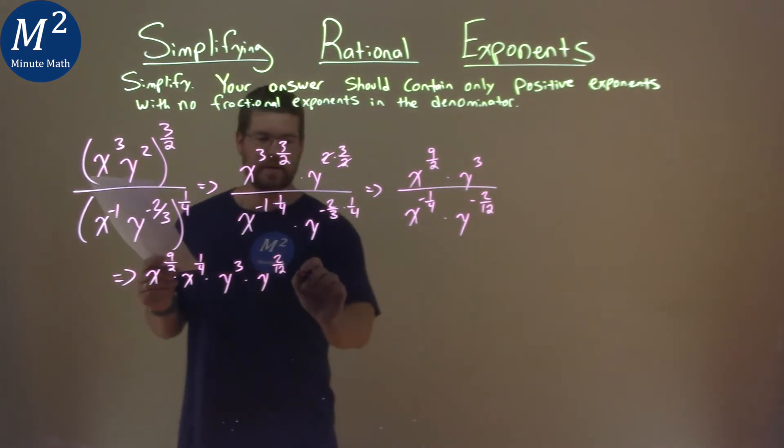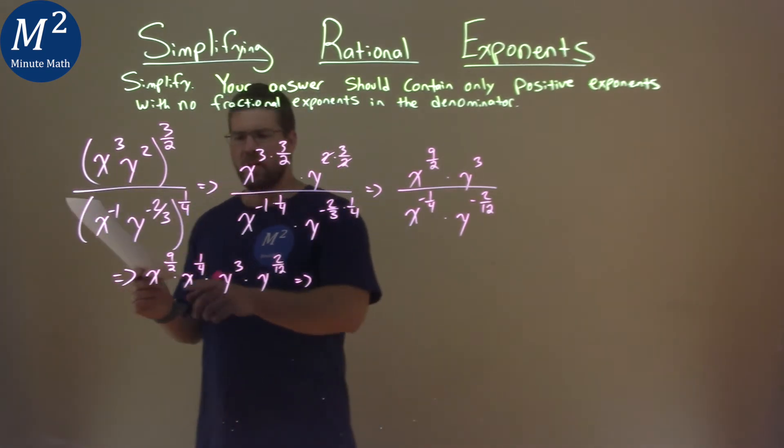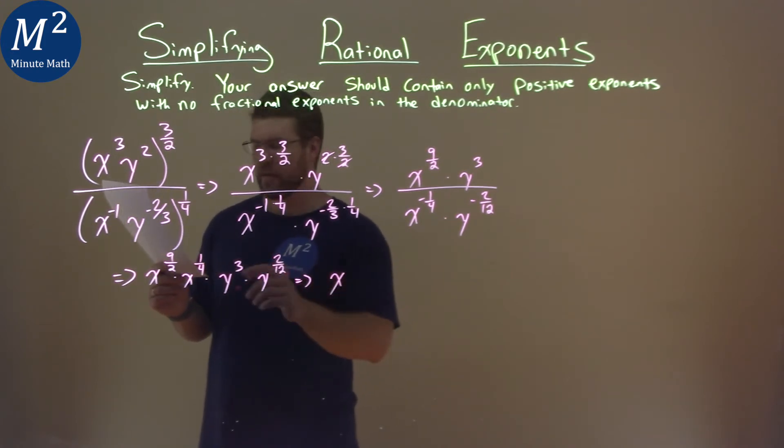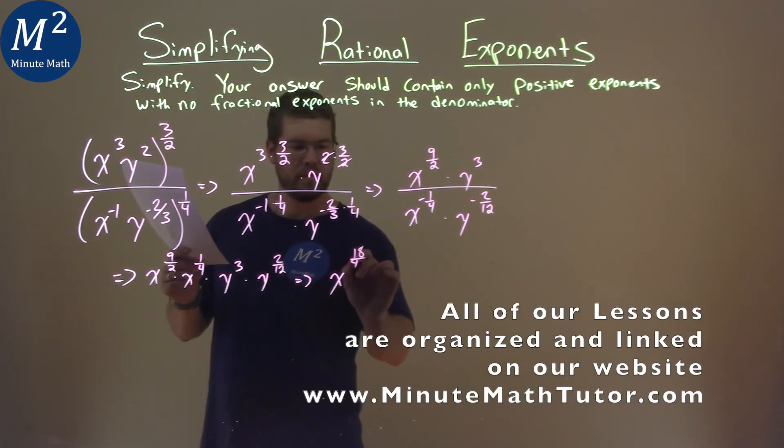Now we need to simplify this where we can. We want to find a common denominator. We're adding fractions. So when we add them together, nine-halves and one-fourth is the same thing as eighteen-fourths plus one-fourth. Remember, we're adding the exponents.